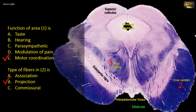The other options for this area: modulation of pain is the function of the periaqueductal gray matter. Parasympathetic innervation is provided by the Edinger-Westphal nucleus, also located at the level of this section. These parasympathetic neurons innervate the sphincter pupillae and the ciliary muscle of the eyeball.